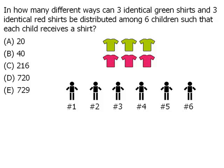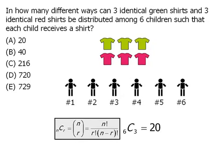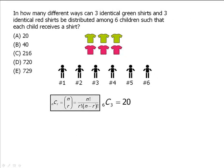We have six children altogether and we want to choose three of them. We can accomplish this in six choose three ways. Using the combination formula to evaluate six choose three, it equals twenty. So our answer is twenty.